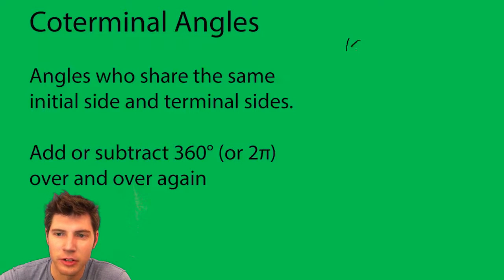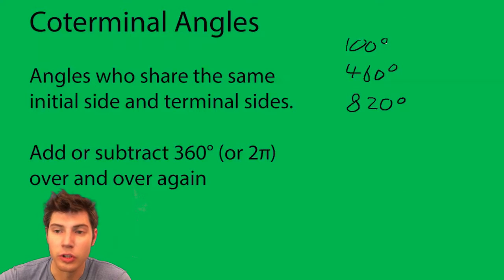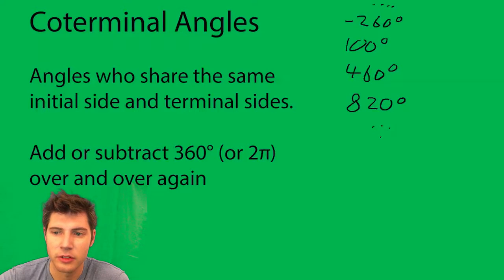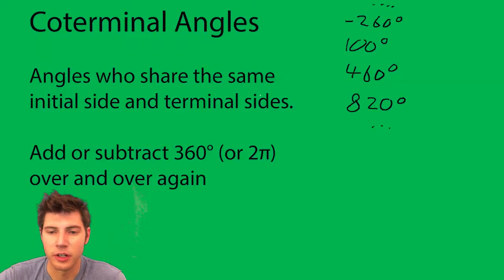A quick example: 100 degrees coterminal angles would be 460 degrees, or add 360 to get 820 degrees, or subtract 360 to get negative 260 degrees. It goes on and on in both directions. That's what coterminal angles are.